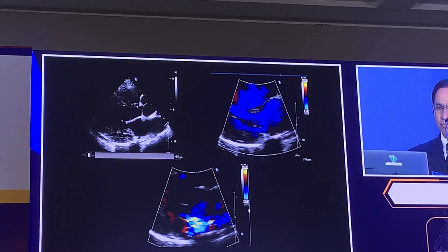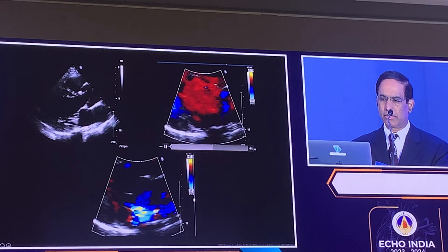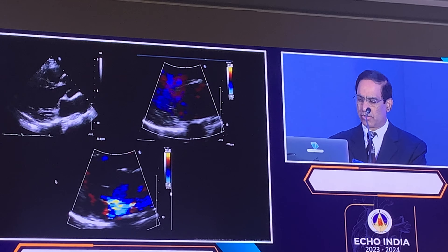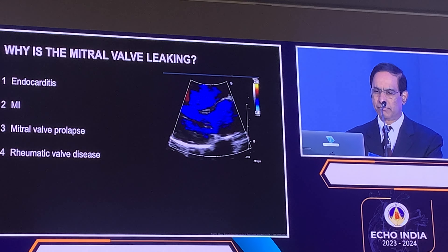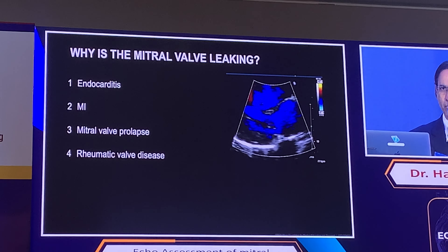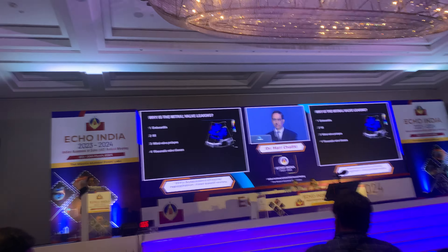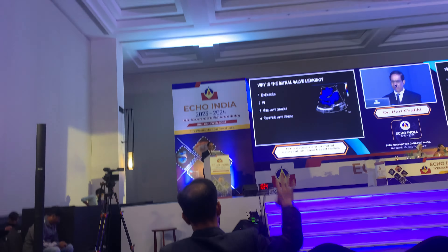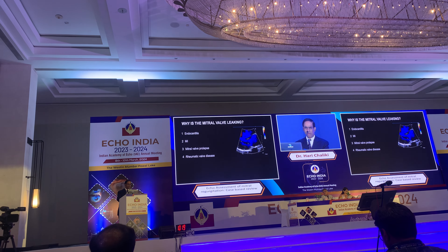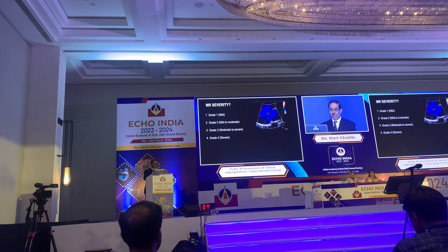From the parasternal view you can see the mitral valve is abnormal. When you turn on color Doppler there is mitral regurgitation. Using audience response — show of hands — how many think this is endocarditis? How many think this is related to myocardial infarction causing the valve to leak? How many think this is mitral prolapse? How many think this is rheumatic valve disease? Looks like you've gotten the question correctly.